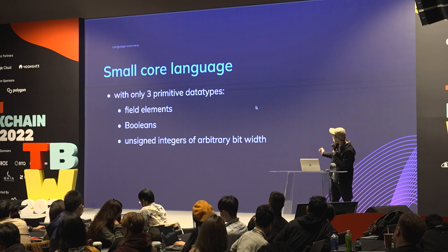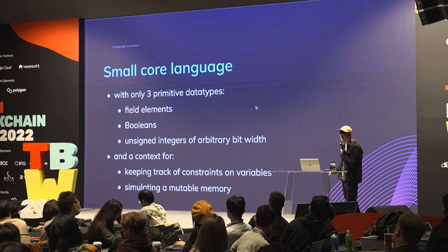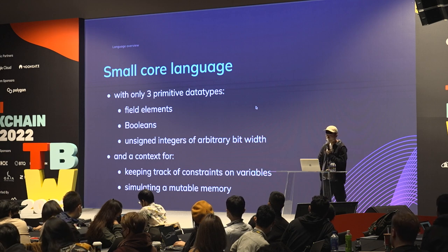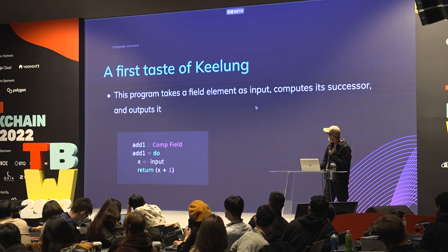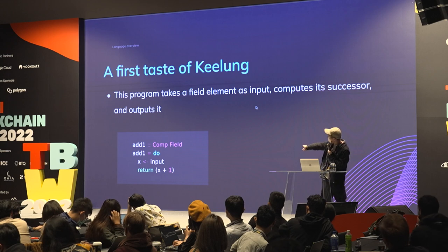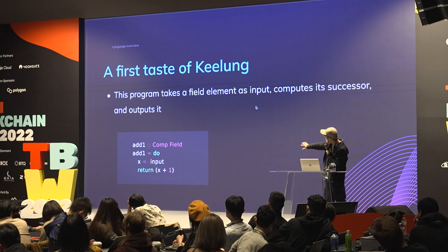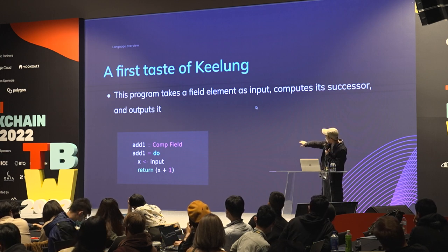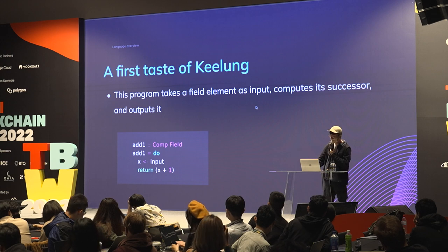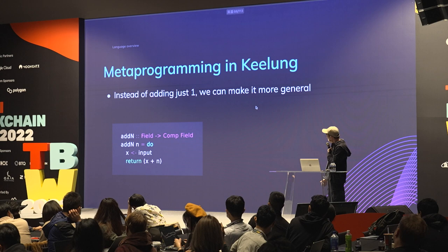Keylong has a context for keeping track of constraints on variables and also mutable memory for iterative mutable operations. A simple piece of code written in Keylong takes a field element as input, computes its successor, and outputs it — pretty straightforward.